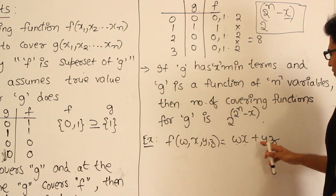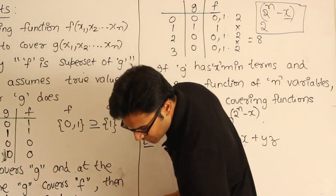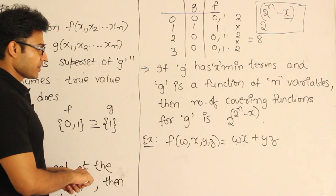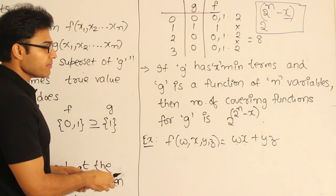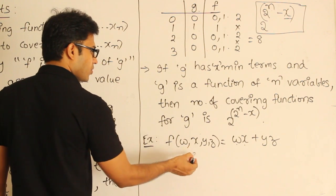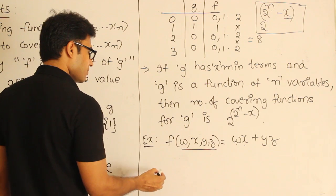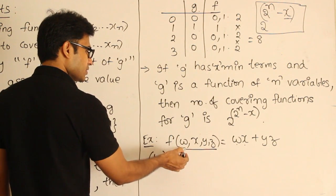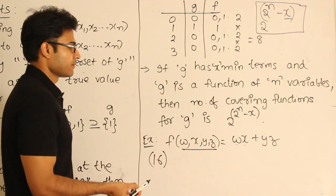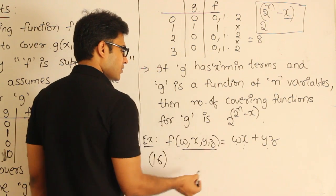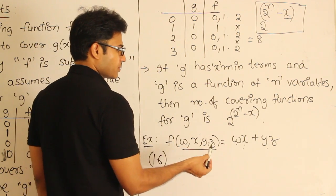If f(w, x, y, z) = wx + yz, how many functions will be covering f? In order to find how many functions cover f, you need to know how many minterms are in f. First, how many minterms are possible with 4 variables? The total number of minterms possible is 16. Now let's see out of these 16, how many minterms has f already chosen. To get this, given the function, convert it to canonical sum-of-products form.